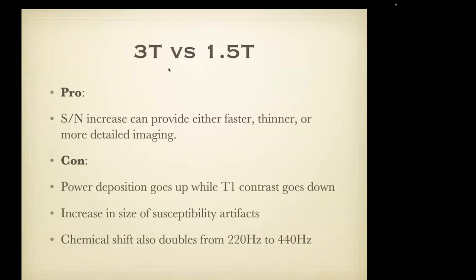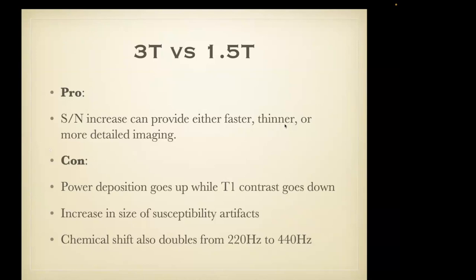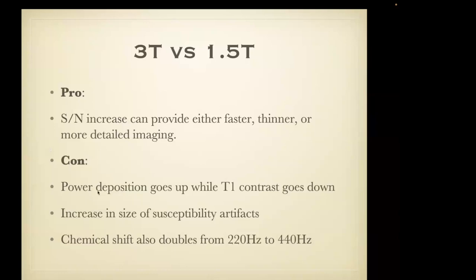Coming back to 3T versus 1.5T: the advantage is we can have either faster imaging, thinner slices, or more detailed imaging. In many sites in the United States where there's a premium placed on volume and throughput, many of the advantages of 3 Tesla have been dedicated to providing faster imaging. But the power deposition goes up, the size of susceptibility artifacts goes up, and chemical shift goes up.